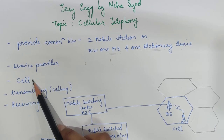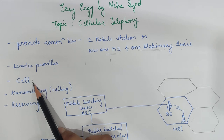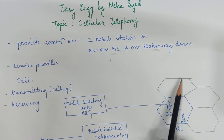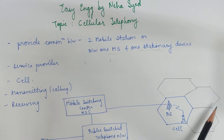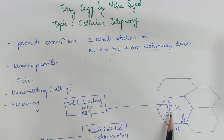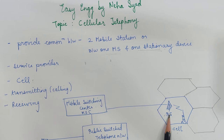One thing that you should know is a cell. To track such calls, each cellular device area has been divided into small regions called cells. Each cell contains an antenna and it is controlled by the network station called the base station.